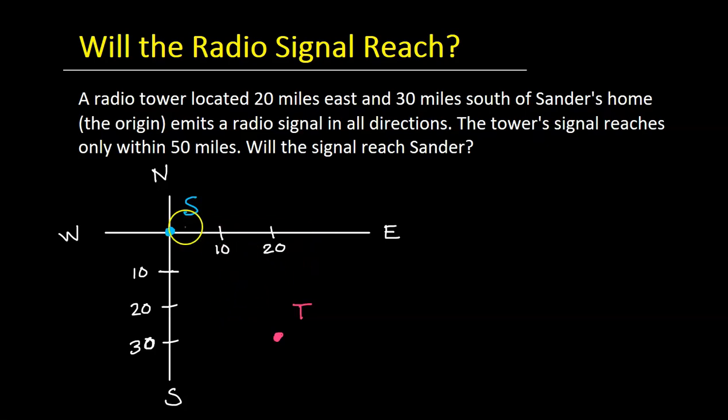So here is Sander's home at the origin. We'll call it S for Sander's. And here is the tower. We will label it T for tower. Notice that we have it 20 miles to the east and 30 miles south.